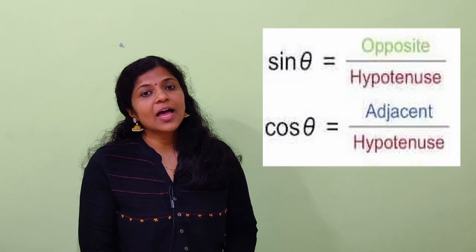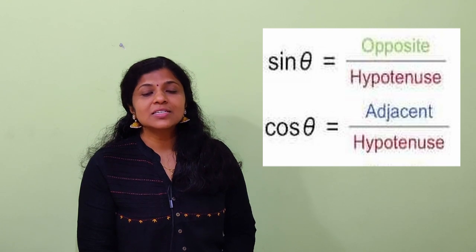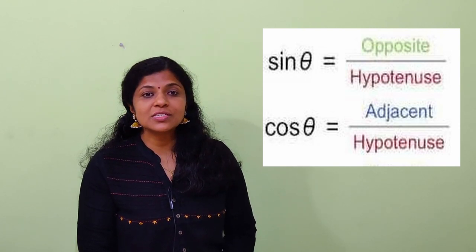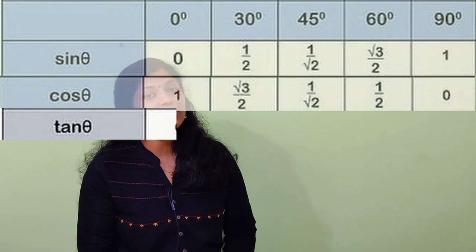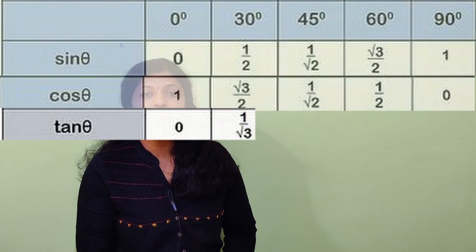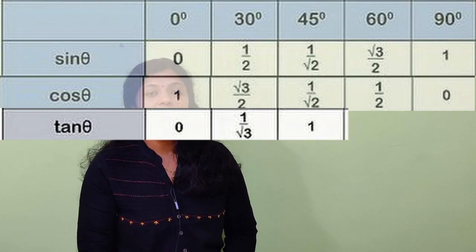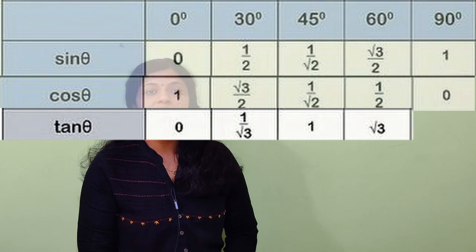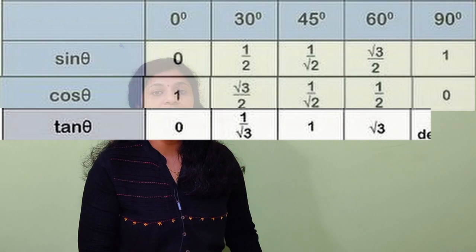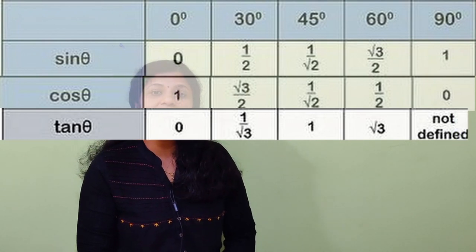Since sine is opposite by hypotenuse and cosine is adjacent by hypotenuse, dividing sine by cosine gives opposite by adjacent, which is tan. So to get the value of tan, we divide the corresponding values of sine and cosine. Tan 0 = 0/1 = 0. Tan 30 = (1/2)/(√3/2) = 1/√3. Tan 45 = 1. Tan 60 = √3. Tan 90 = sin 90 / cos 90 = 1/0, and dividing anything by 0 gives infinity, so tan 90 is infinity.